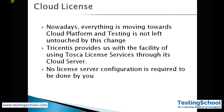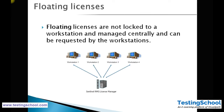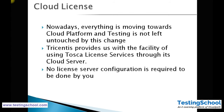The fourth type is the Cloud License. With floating licenses, you need a server for managing all licenses, which is extra overhead for the company. To avoid this, companies shift to cloud licensing, where managing licenses is done by Tosca through its cloud server — not by you. The advantage of cloud licensing is that you do not need to configure a license server; Tosca takes care of this using its cloud server.